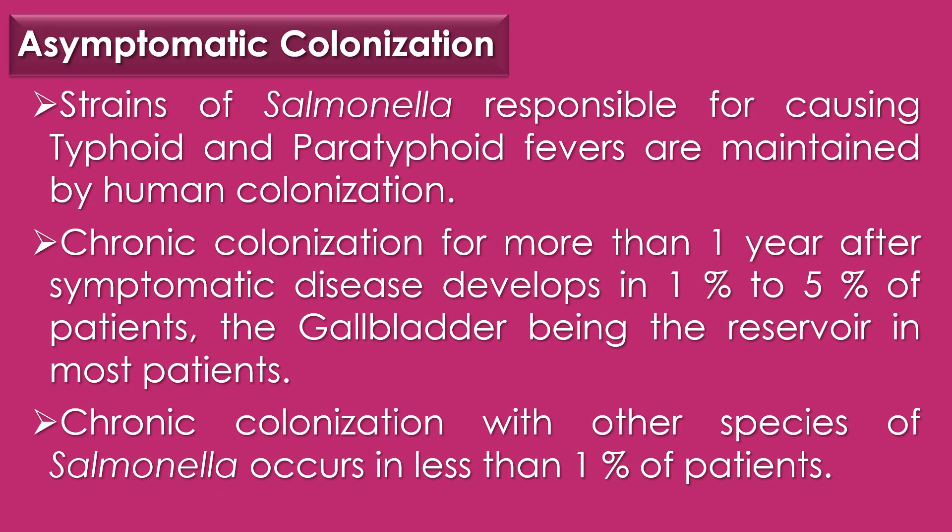The fourth clinical disease is asymptomatic colonization. Strains of Salmonella responsible for typhoid and paratyphoid fevers are maintained by human colonization. Chronic colonization for more than one year develops in 1% to 5% of patients, with the gallbladder being the reservoir in most cases. Chronic colonization with other Salmonella species occurs in less than 1% of patients and does not represent an important source of human infection.